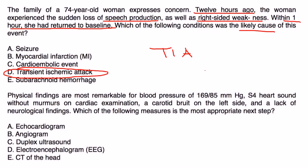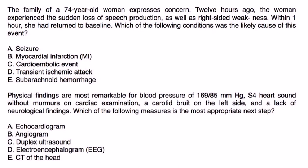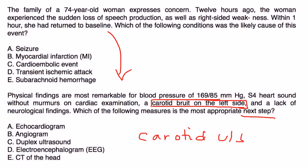Next question. Physical findings are most remarkable for blood pressure of 169 over 85, S4 heart sound without murmurs, carotid bruit on the left side, and the lack of neurologic findings. Which of the following measures is the most appropriate next step? Well, you already listened to her carotid arteries. Now you can proceed with the carotid ultrasound. That would be choice C.